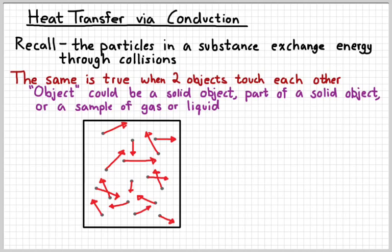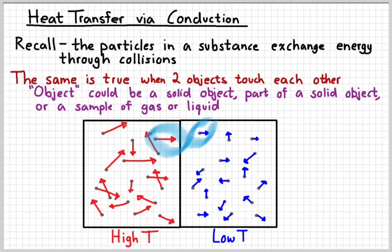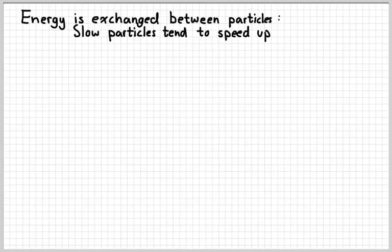So if this picture represents something that's hot touching something that is cold, then the energy can be transferred from the hot particles when they collide. Remember that in collisions between particles, particles will tend to slow down if they were moving fast, and they will tend to speed up when they were moving slow.